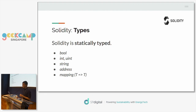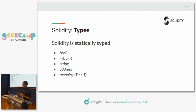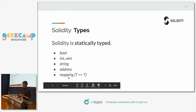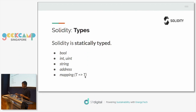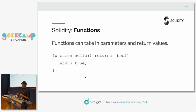Solidity is statically typed — similar to Java — with types like booleans, integers, unsigned integers, and strings. It also has a unique type called address, which you can think of as a unique ID on the blockchain, like an email address. And it has a hash table called mapping — for example, a mapping from a string key to a boolean value.